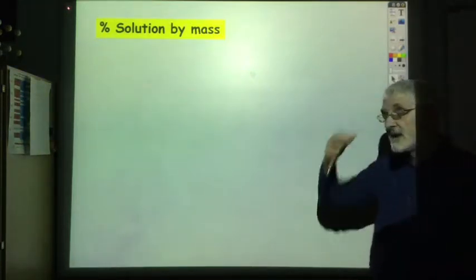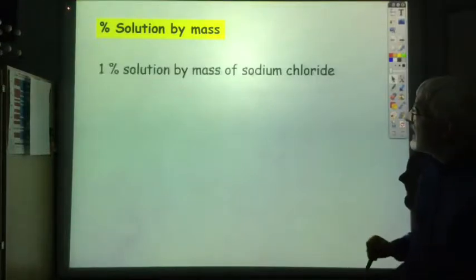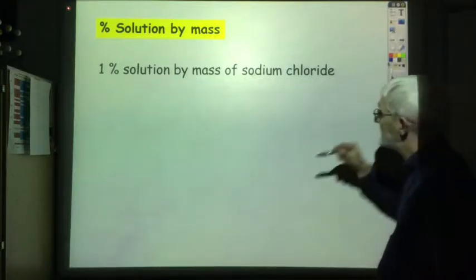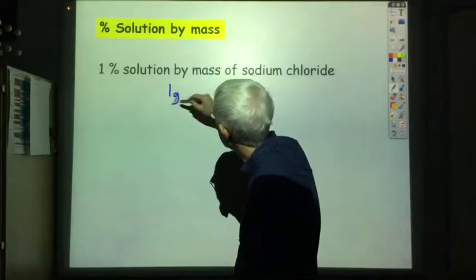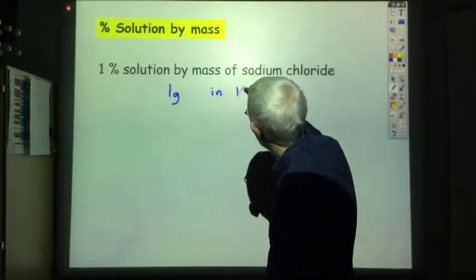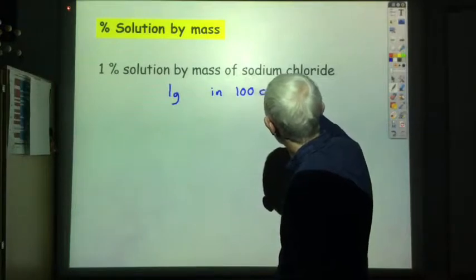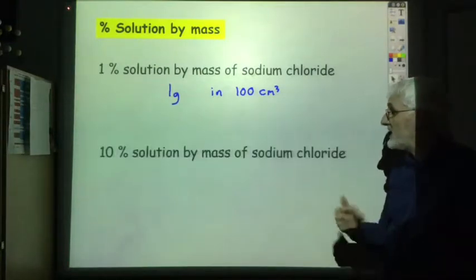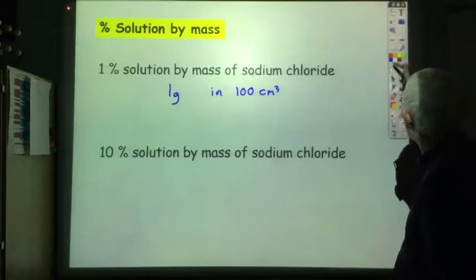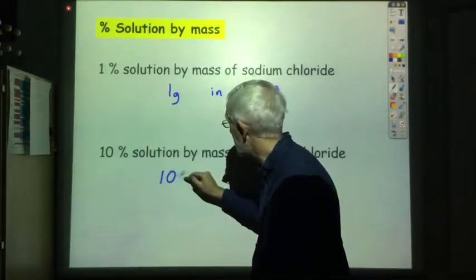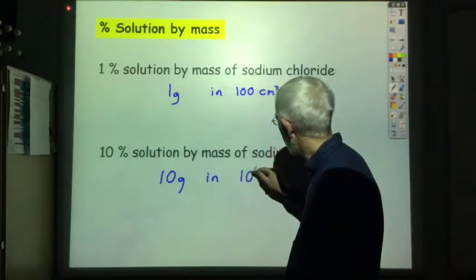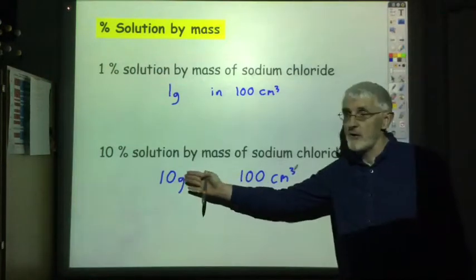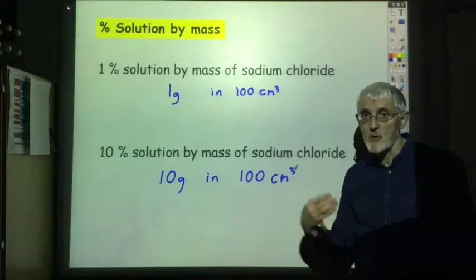Let's start by looking at a percentage solution by mass. If we say we've got a 1% solution by mass of sodium chloride, what we mean is that we have dissolved 1 gram of sodium chloride in 100 cubic centimetres of water. That's what we mean by a 1% solution. If we talk about a 10% solution by mass of sodium chloride, then we've dissolved 10 grams in 100 cubic centimetres. You might have more than 100 cubic centimetres of solution, but that ratio of 10 grams to every 100 cubic centimetres of water will be maintained.